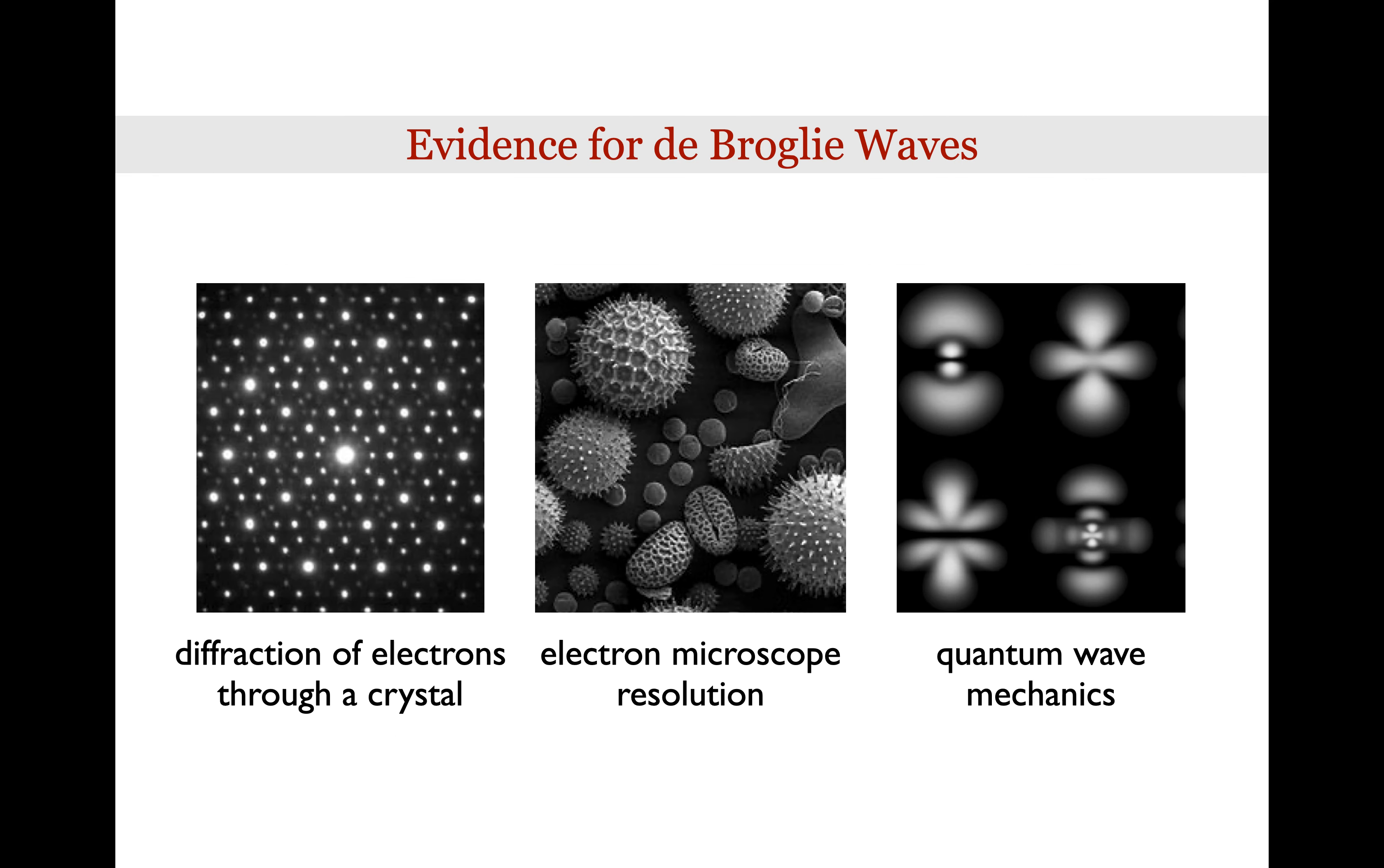So what's the evidence that particles actually do exhibit wave behavior? Just as x-rays produce diffraction patterns when they are shot through a crystal, electrons can also be diffracted by crystals if the de Broglie wavelength of the electron is comparable to the spacing of the atoms in the crystal lattice. The image on the left hand side shows a diffraction pattern of electrons through the crystal.